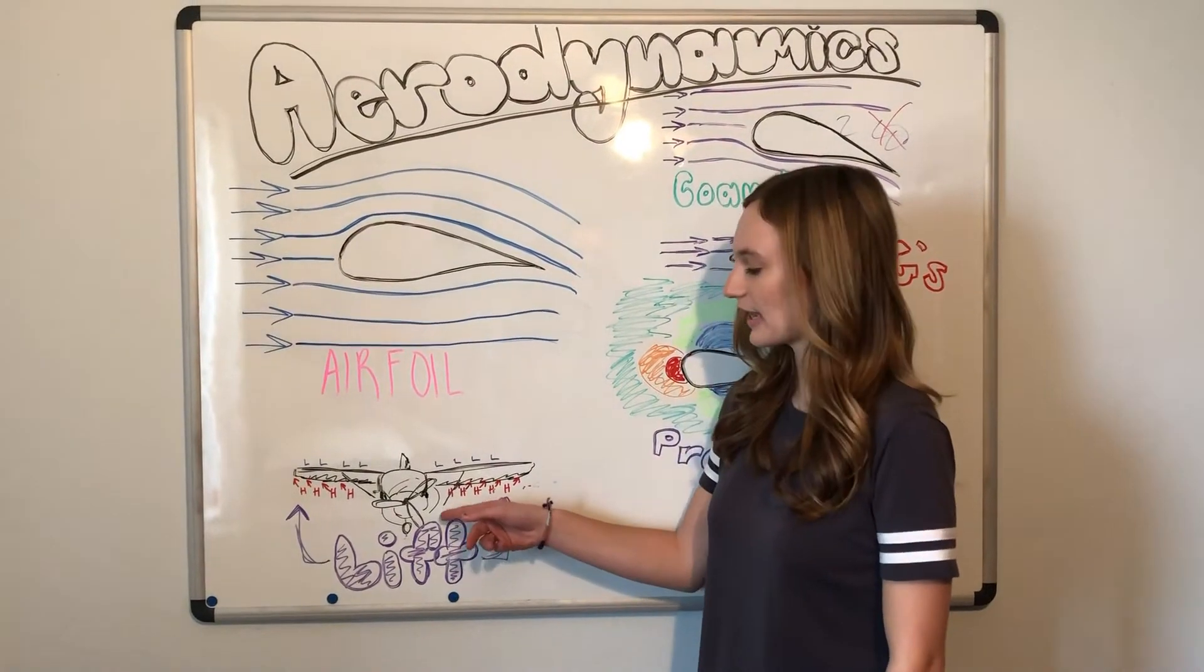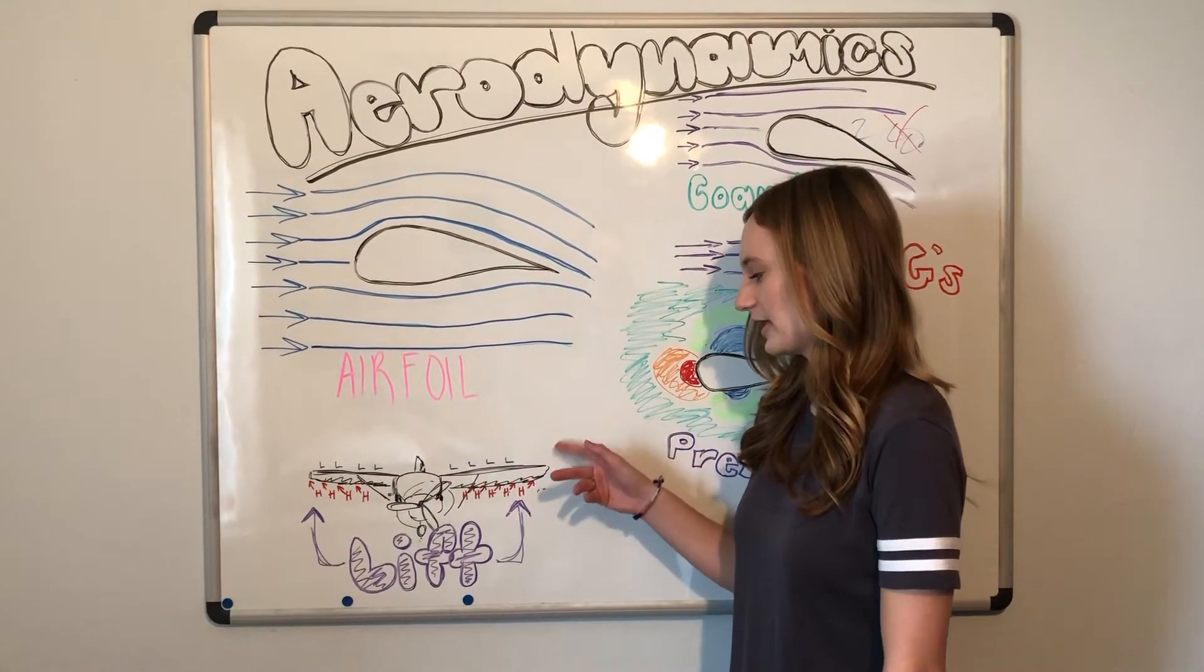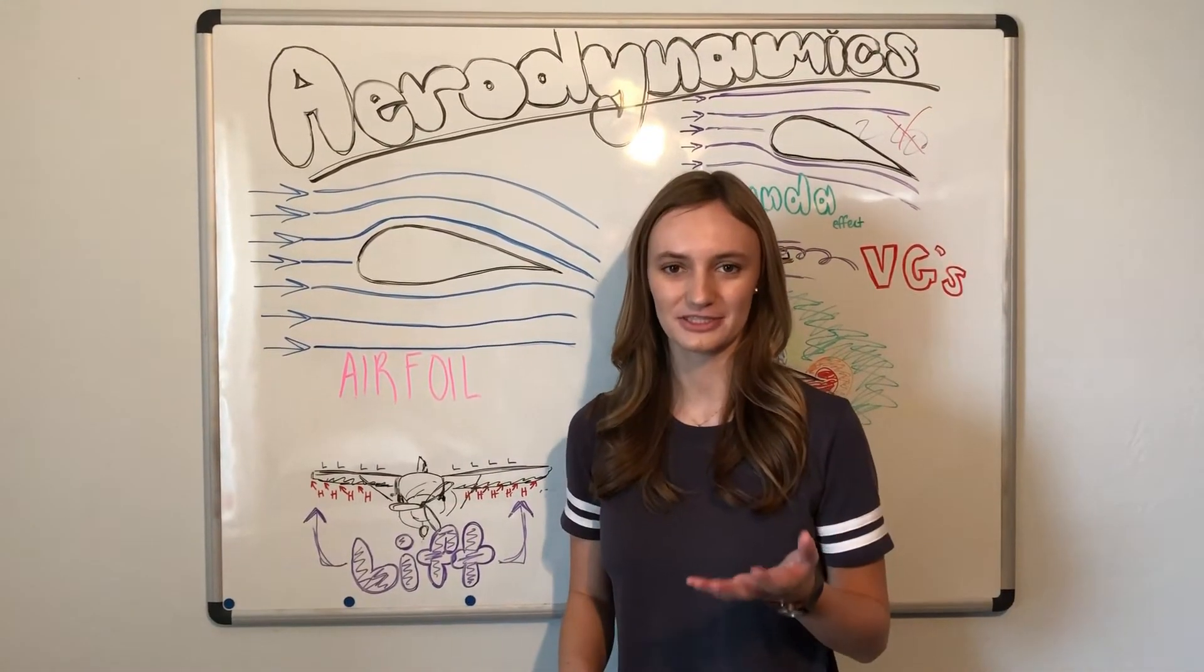Lift is generated when there's high pressure underneath the wing and low pressure above the wing. This carries the airplane up into the air. But where does this pressure come from?